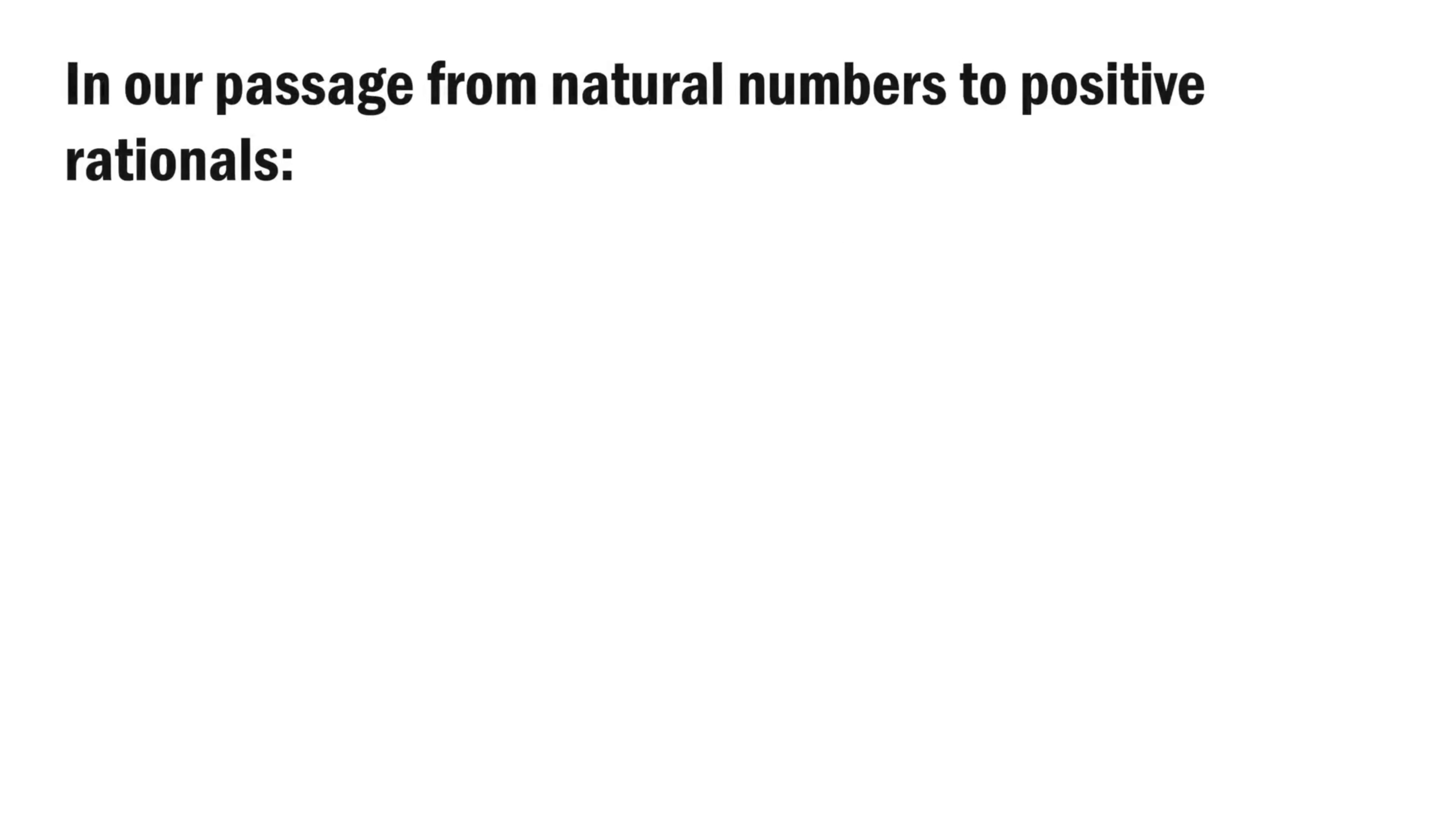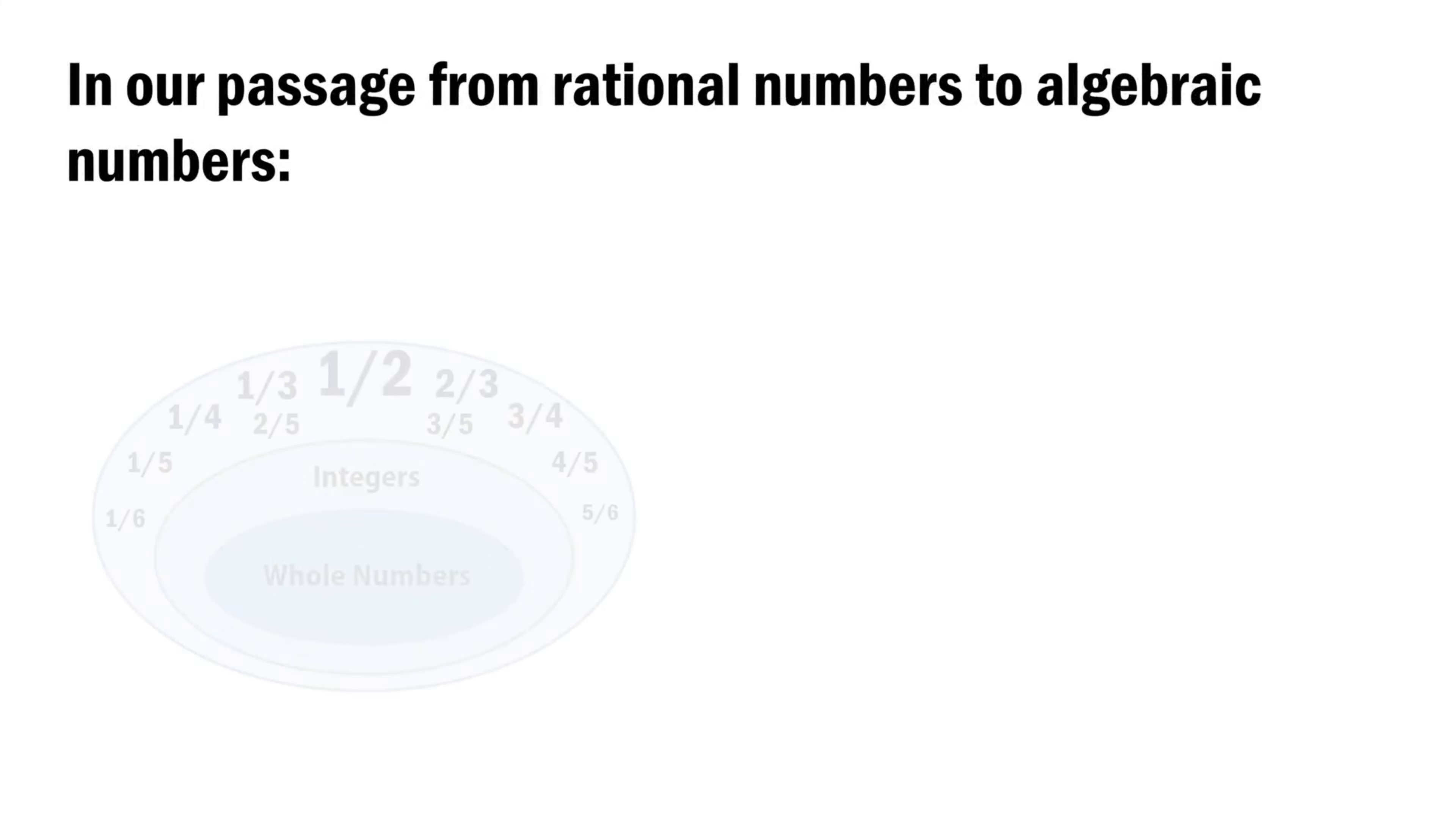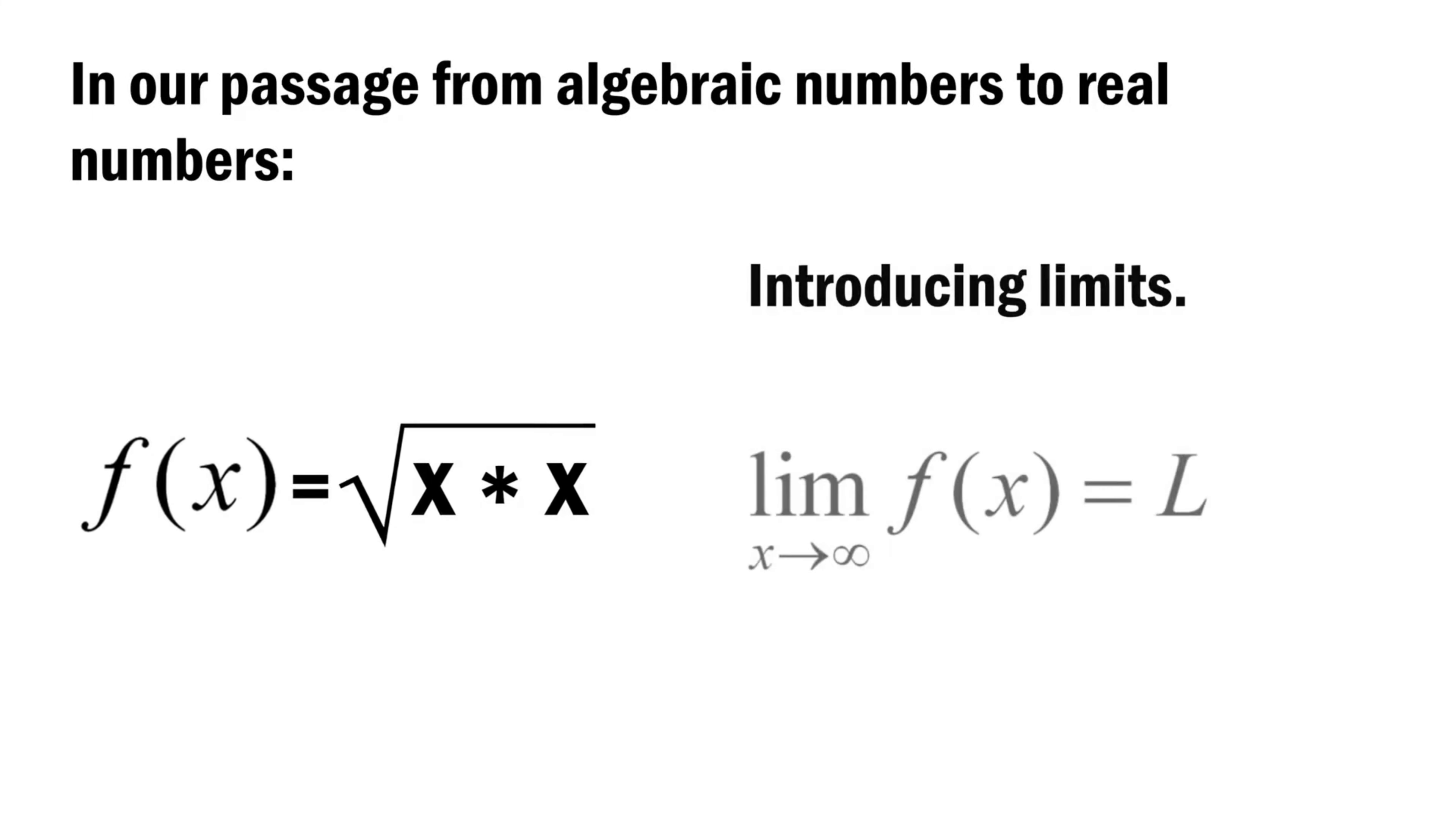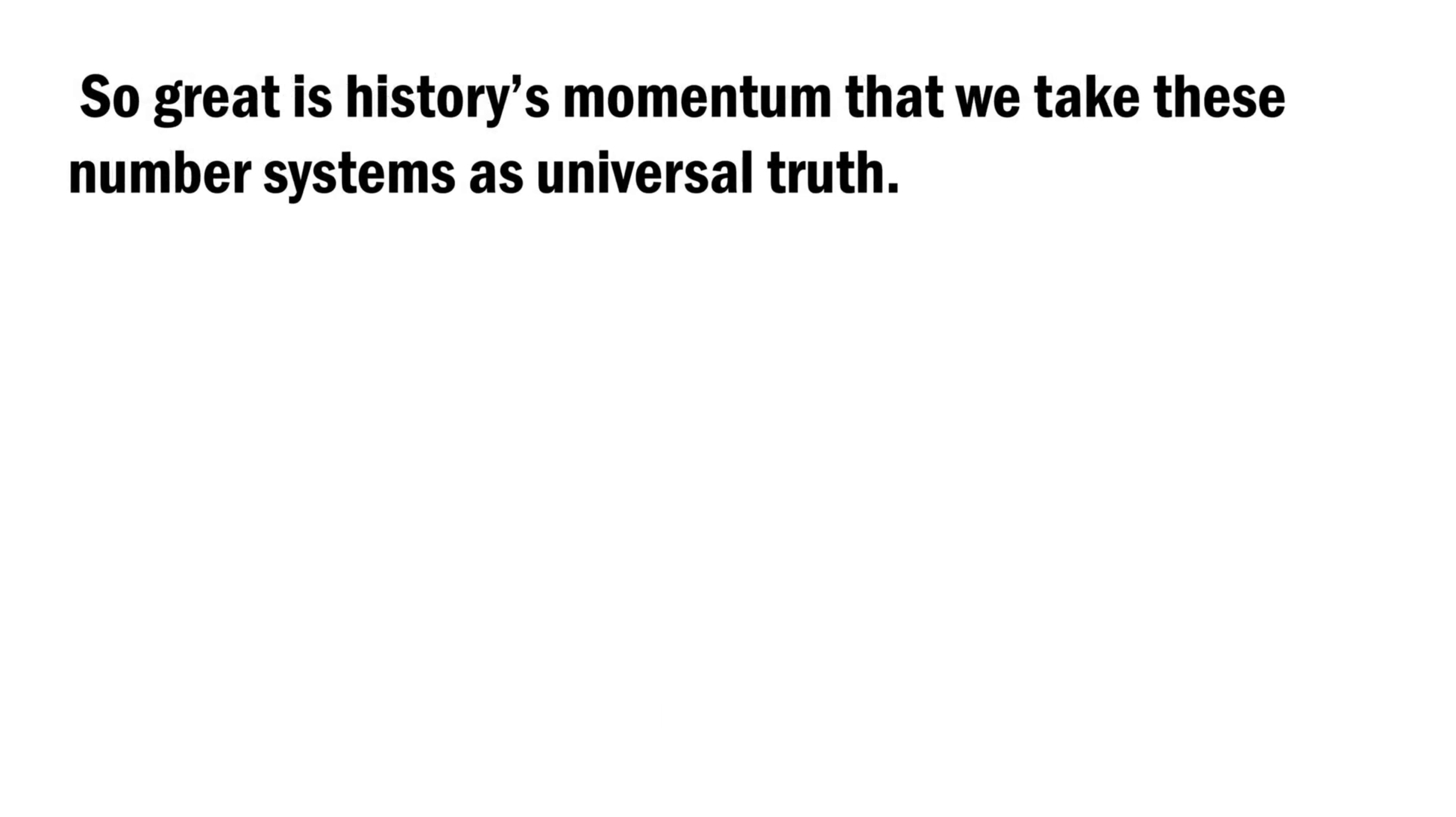In our passage from natural numbers to positive rationals, introducing ratios. In our passage from rational numbers to algebraic numbers, introducing roots. In our passage from algebraic numbers to real numbers, introducing limits. And in our passage from real numbers to complex numbers, where we introduce solutions to the equation x times x equals negative 1. Now so great is history's momentum that we take these number systems as universal truth. Why?